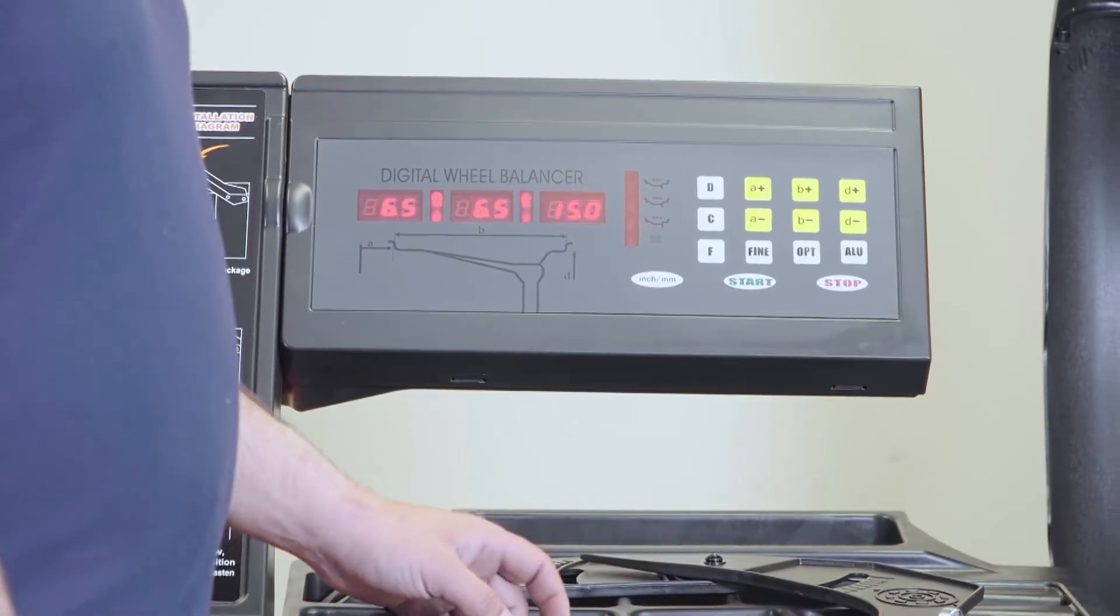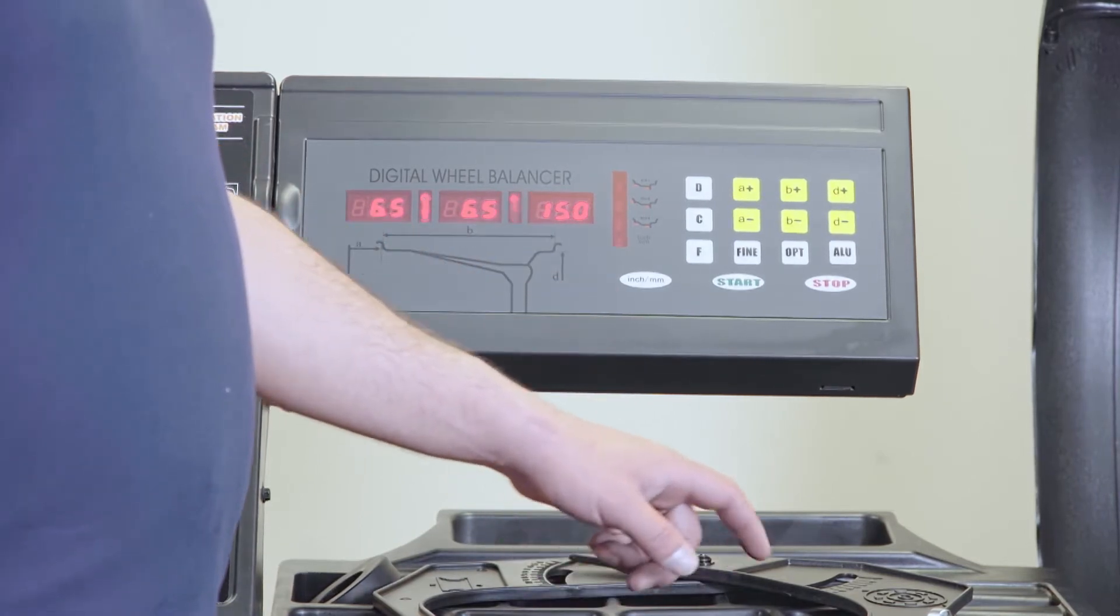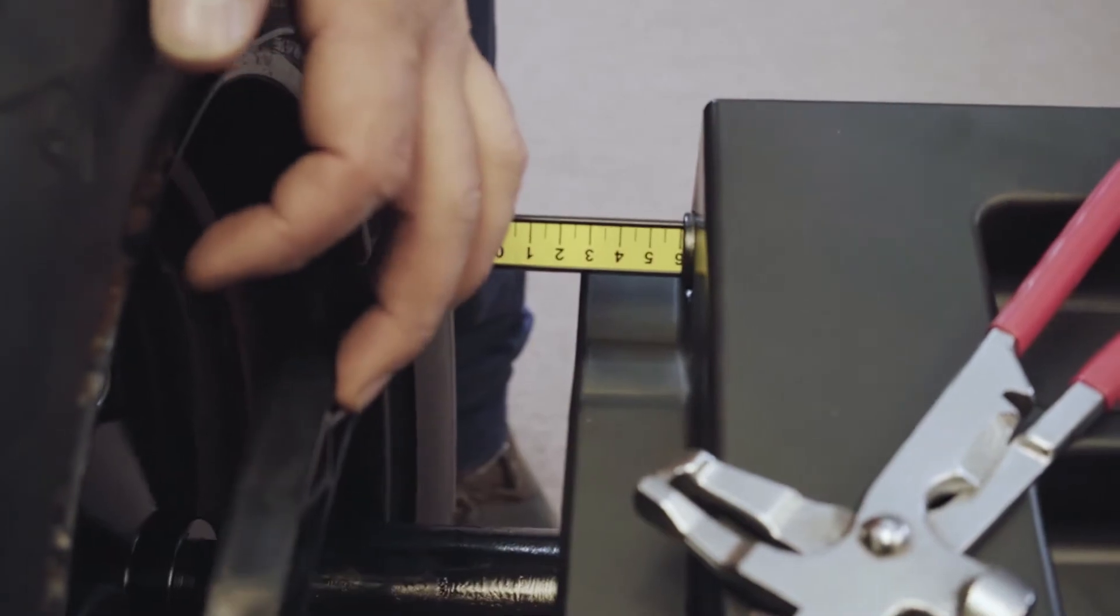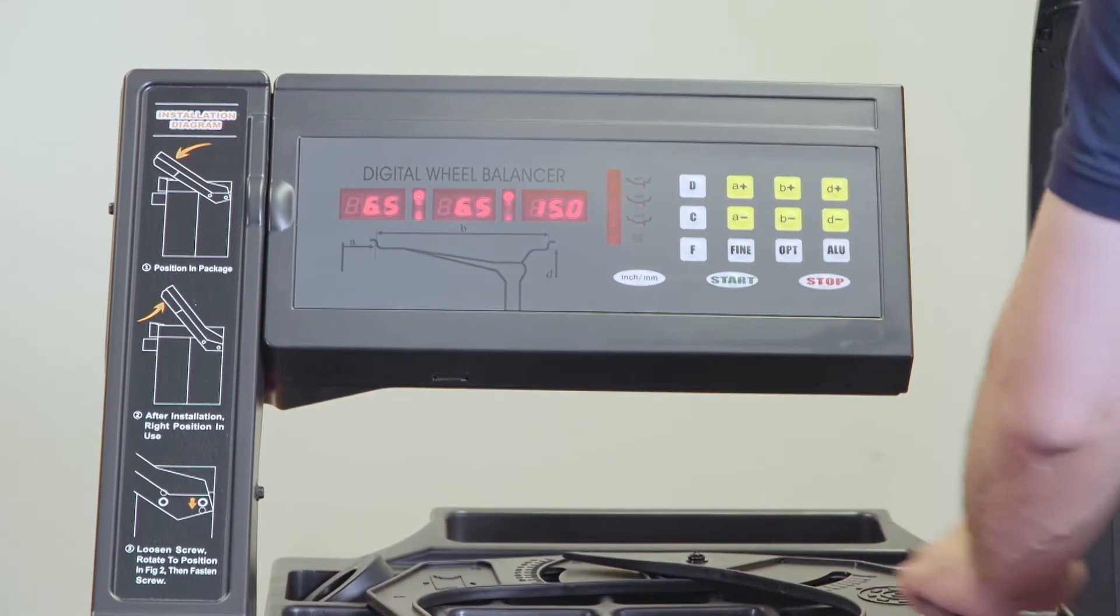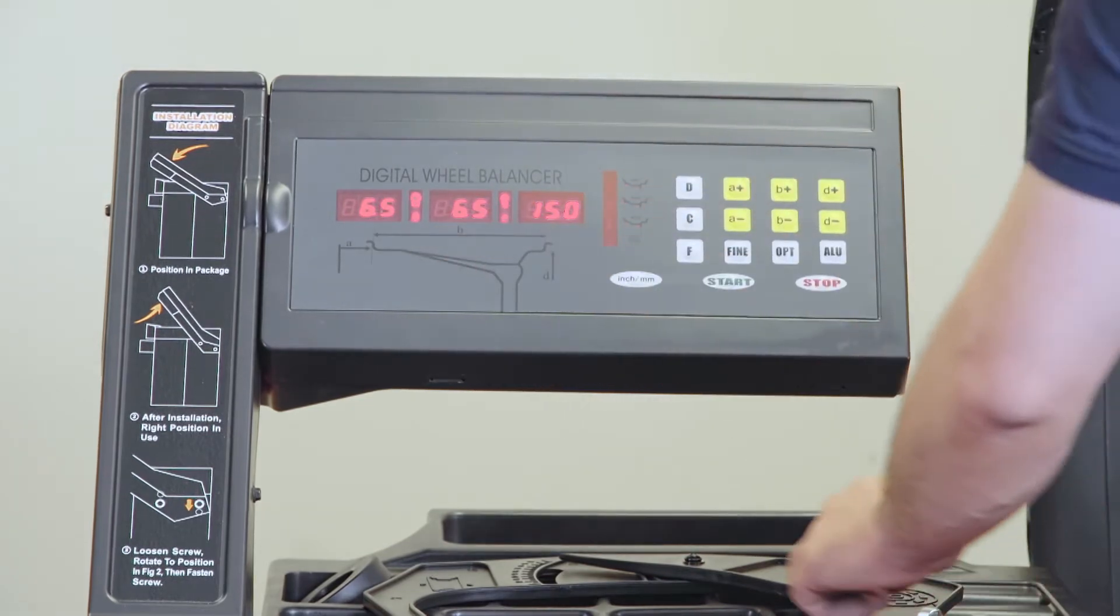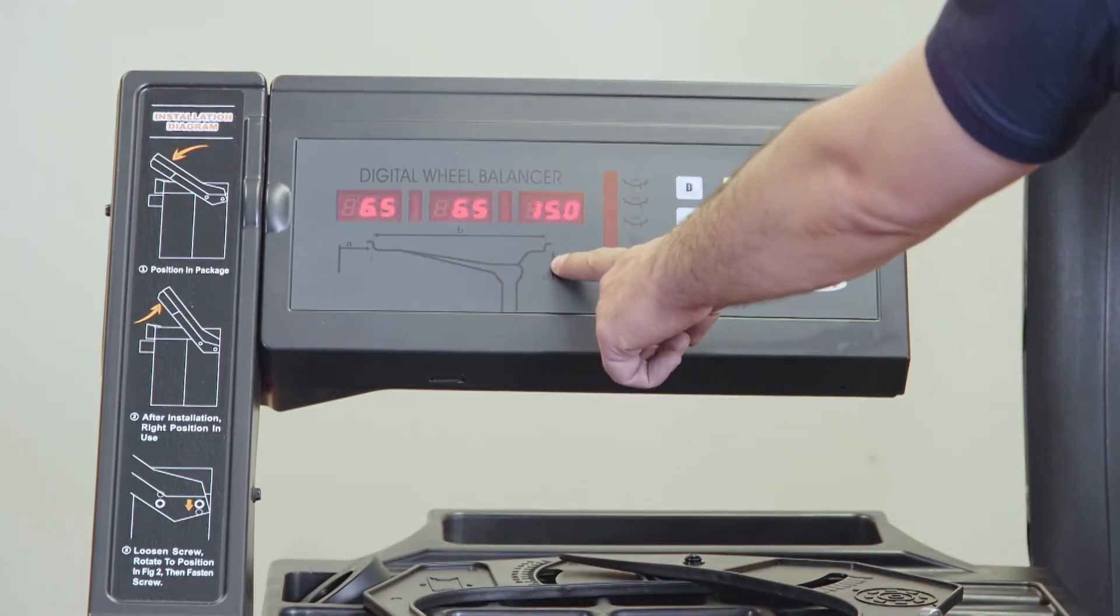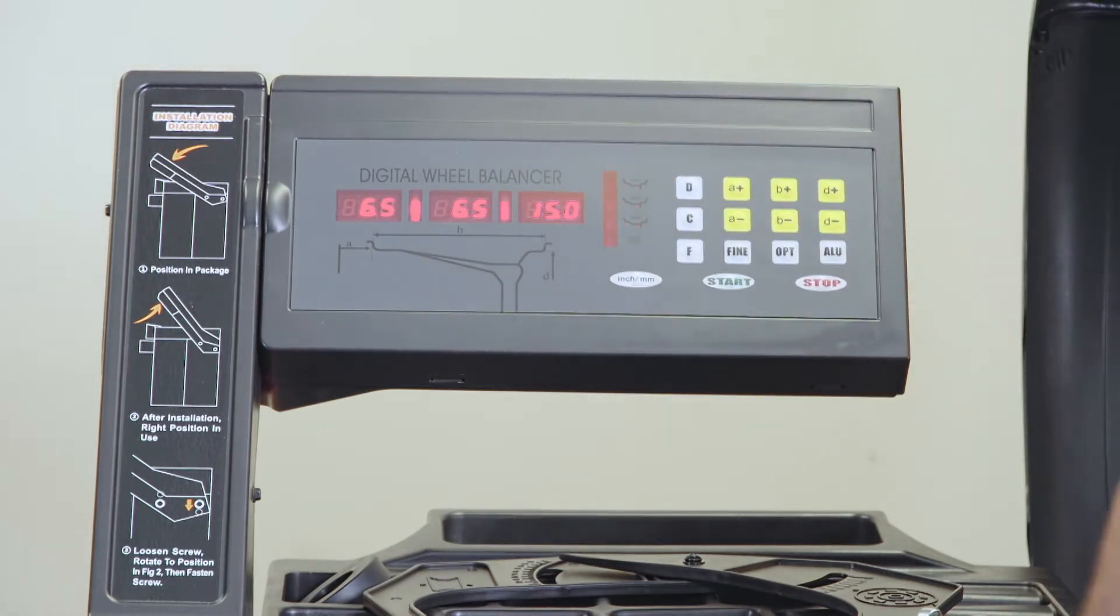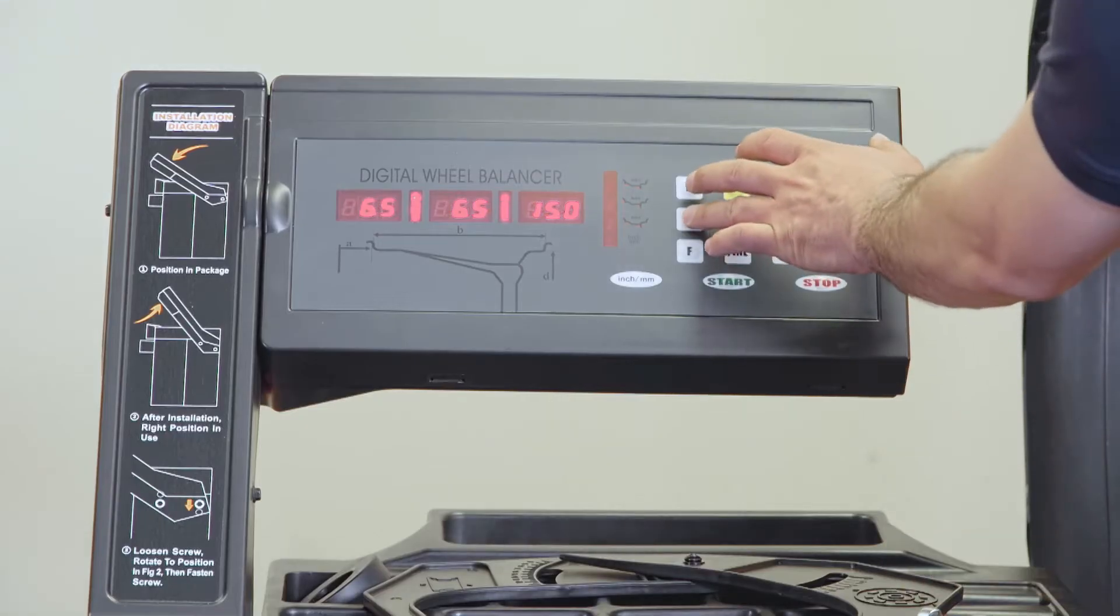For the self calibration, we're going to tell the machine A, B and D - the distance, width and diameter. So when you pull the ruler, it'll give you the distance and the diameter manually. You have to automatically, you have to put the width manually. And then you hold C and D.